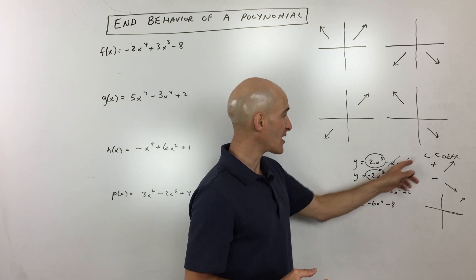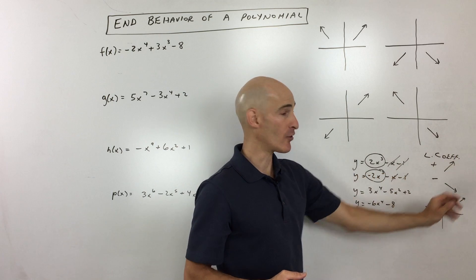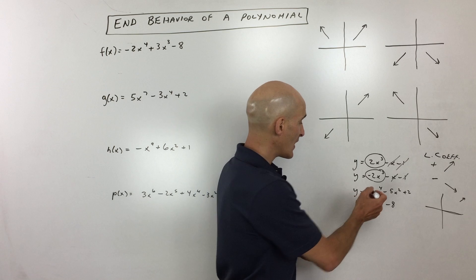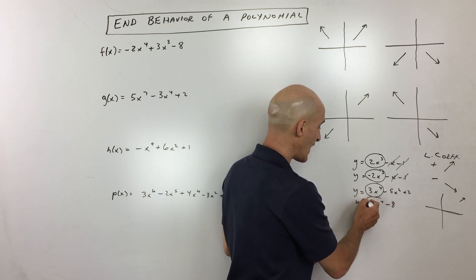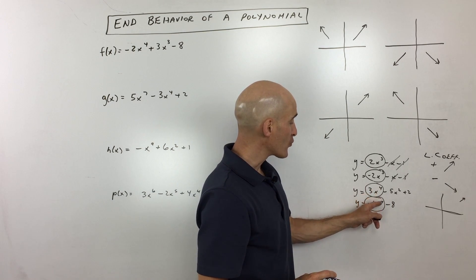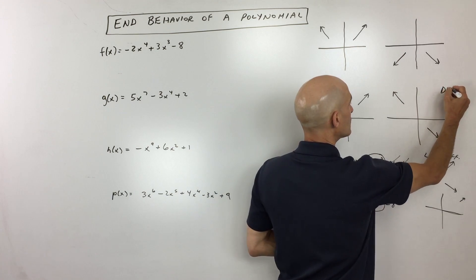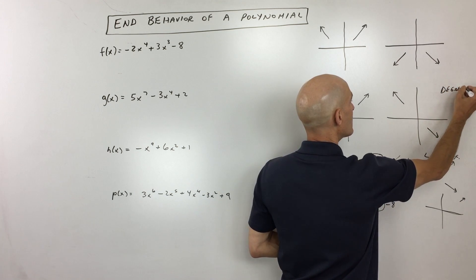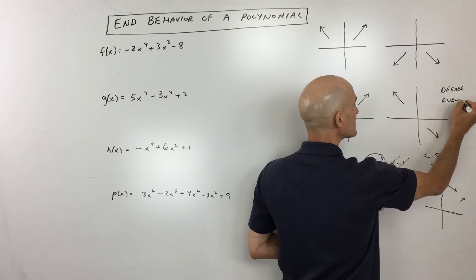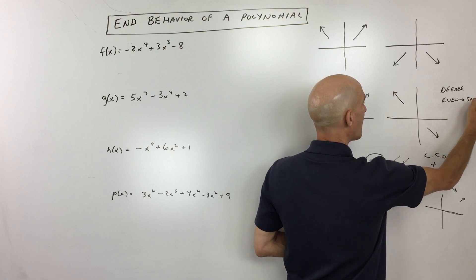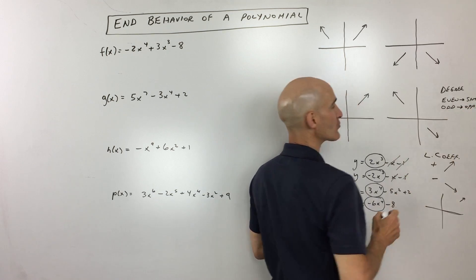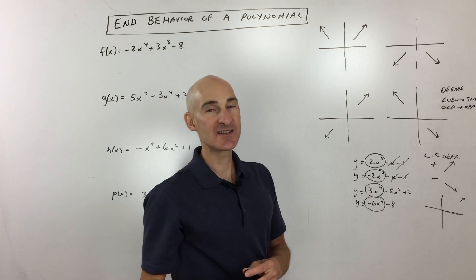Now the second part: the leading coefficient determines the right-end behavior. For the left-end behavior, you focus on the degree of the highest-powered term. If the degree is even — like 2, 4, or 6 — then the end behavior is the same on both sides. If the degree is odd, then it goes the opposite direction on the left. So just remember: even is the same, odd is the opposite.